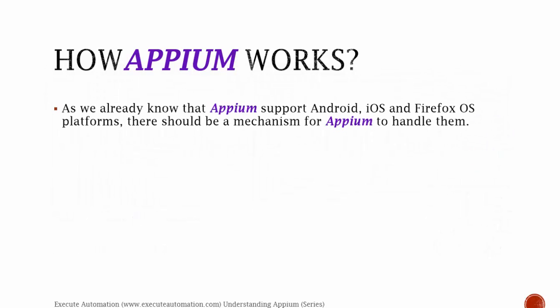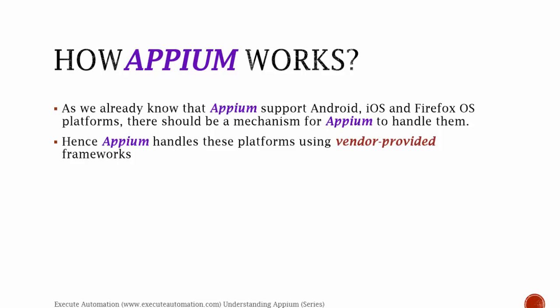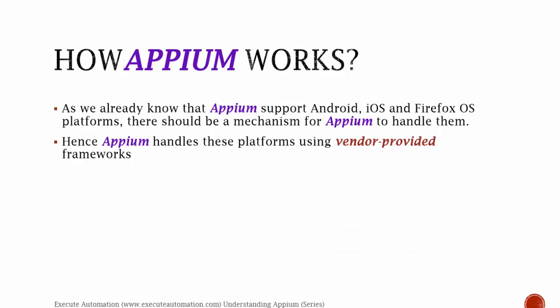So how does Appium work? As we already know, Appium supports Android, iOS, and Firefox operating system platforms, so there should be a mechanism for Appium to handle them. Appium handles these platforms using something called vendor-provided frameworks. As we already discussed in part 1, each operating system has their specific vendor-provided frameworks.